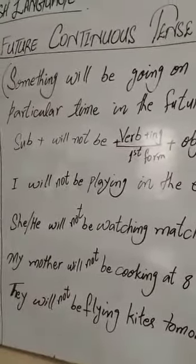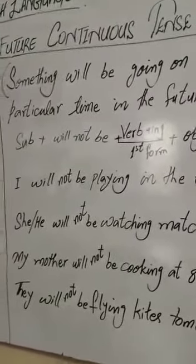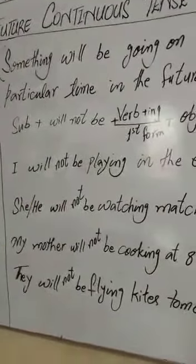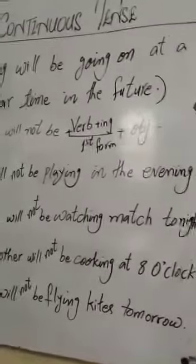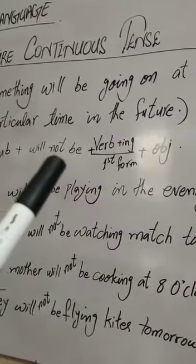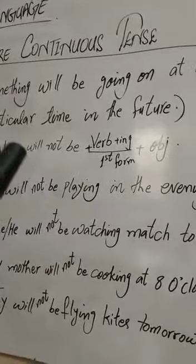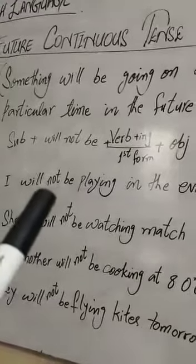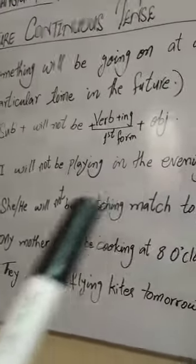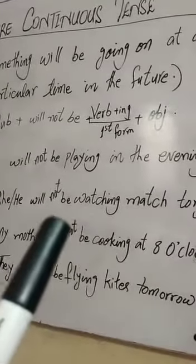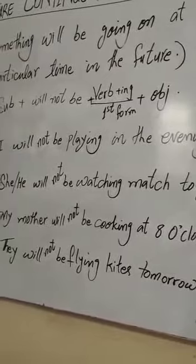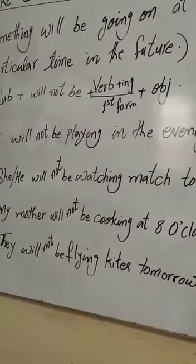Future میں ایک تھوڑی سی changing ہے — will اور be کے درمیان میں not لگانا ہے negative بنانے کے لیے: will not be. I will not be playing in the evening. He will not be watching match tonight. My mother will not be cooking at 8 o'clock. They will not be flying kites tomorrow.